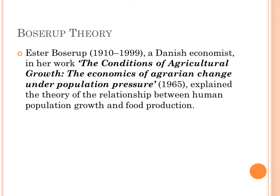Boserup is a Danish economist and she wrote an article titled 'The Conditions of Agricultural Growth: The Economics of Agrarian Change under Population Pressure,' which was published in 1965. In this article, she tried to explain the relationship between human population growth rate and food production.